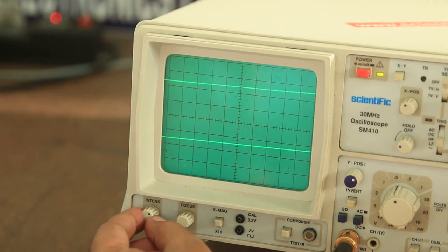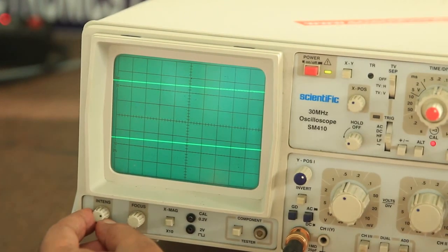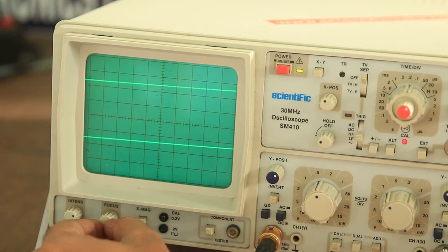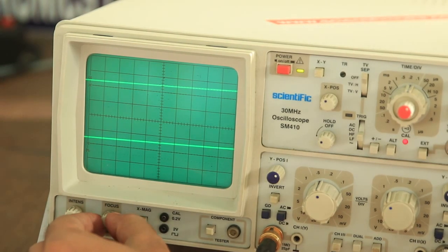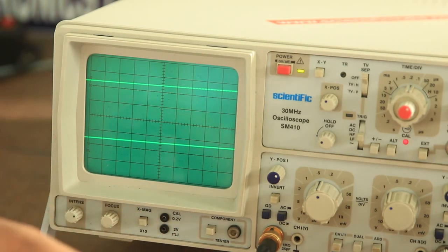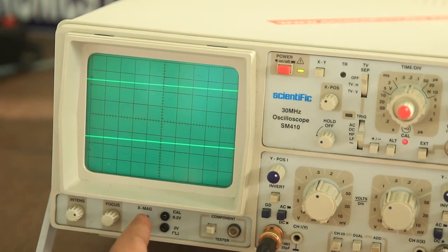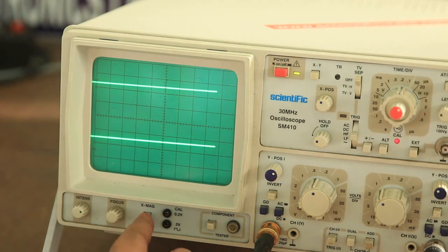The second knob is called the focusing knob. As you can see, as we move this thing, then it gets defocused or focused. So we can make a right focus adjustment by turning this knob. And then this is called the X magnification knob. It can multiply 10 times and compress the picture, so you can use it if someone needs it.